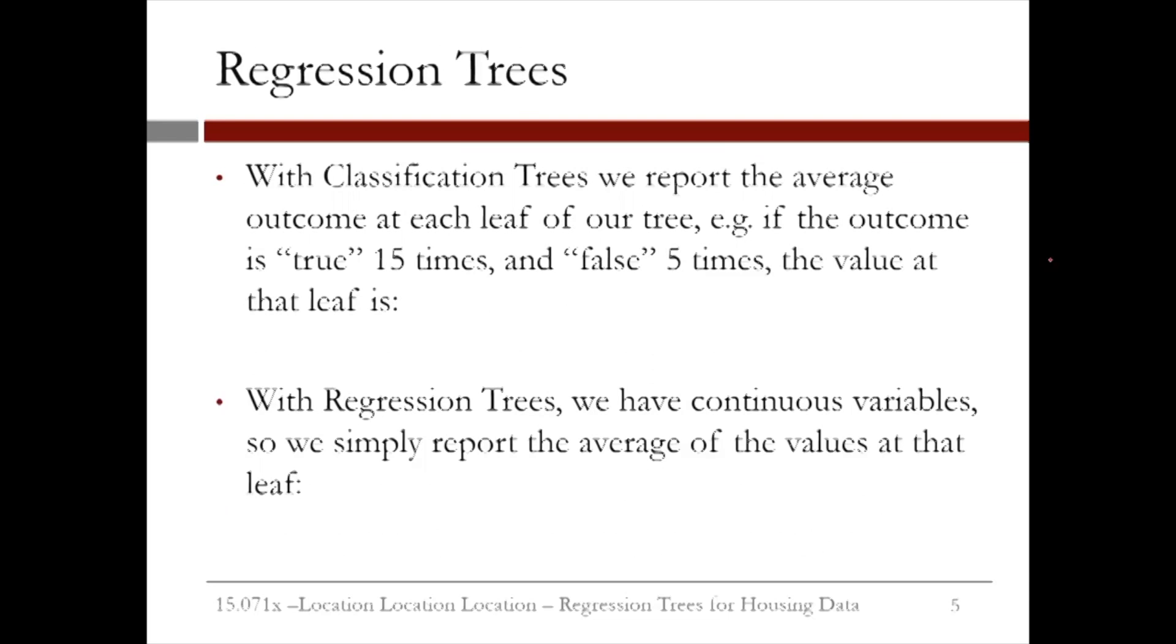So what does that mean? Well, with classification trees, we report the average outcome at each leaf of our tree. For example, if the outcome is true 15 times and false 5 times, the value at that leaf of the tree would be 15 over 15 plus 5, which is 0.75. Now, if we use the default threshold of 0.5, we would say the value at this leaf is true.